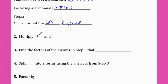Then we're going to multiply a and c — the number in front of the x squared and the number that doesn't have an x. Then we're going to find the factors of that product that add up to b, the number in front of x. Then we're going to split bx into two terms using those answers, and finally we're going to factor by grouping.